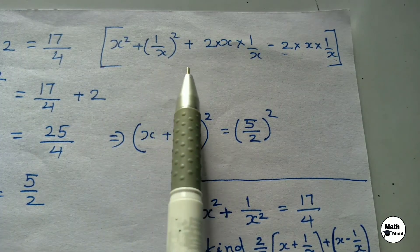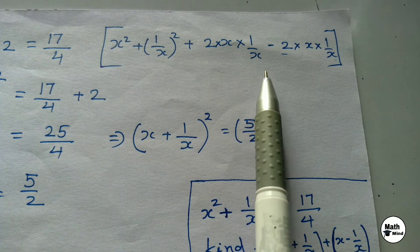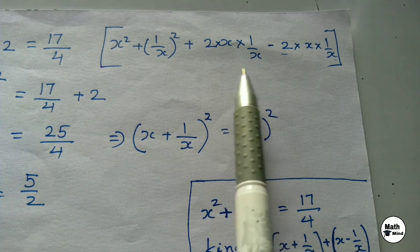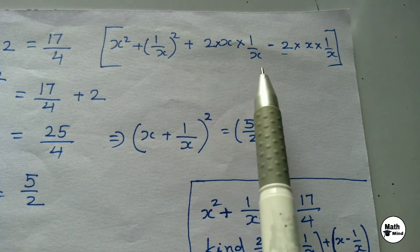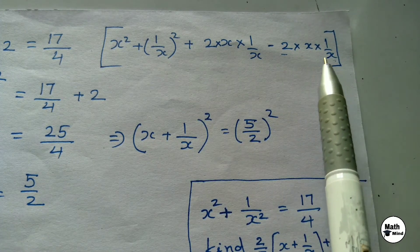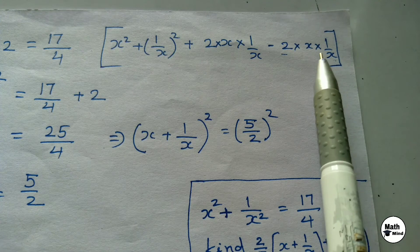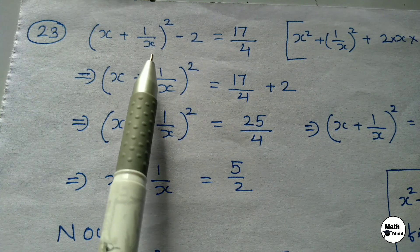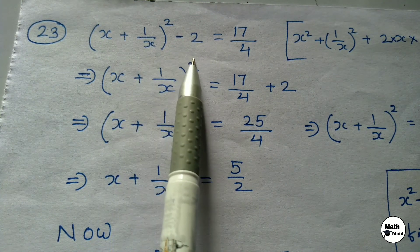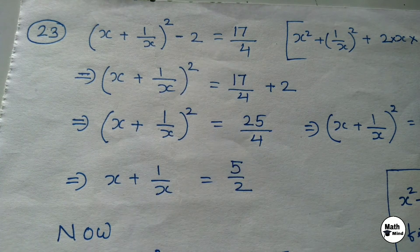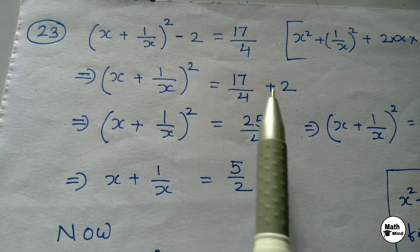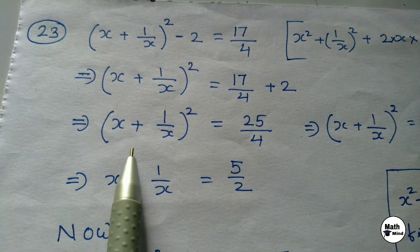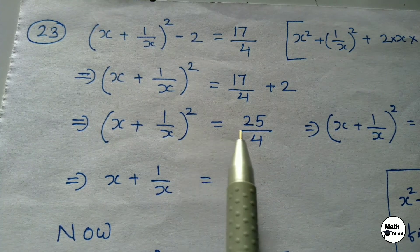(x+1/x)² = x²+1/x²+2×x×(1/x). The value of x²+1/x²+2×x×(1/x) is (x+1/x)². Since we added 2×x×(1/x), we must subtract the same value. x and x cancel, remaining −2. Hence the left-hand side becomes (x+1/x)²−2 = 17/4. Moving 2 to the right-hand side and solving gives 25/4. So (x+1/x)² = 25/4.